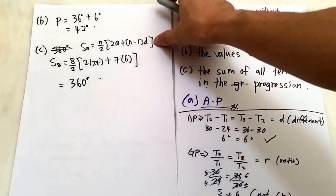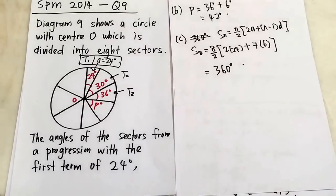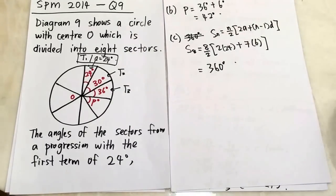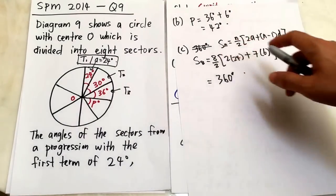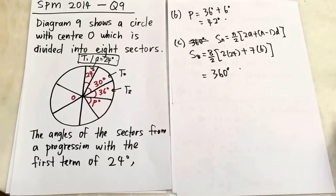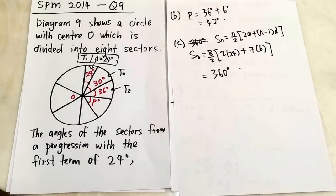Remember: whenever you have arithmetic progression, the Sn formula is different from geometric progression. I think this question is quite simple. I will post questions 10 through to the last question. If you have any comments, post on my YouTube or Facebook page. If you like this video, share it with your friends or subscribe to my channel. Thanks for watching.